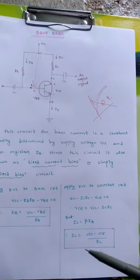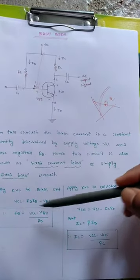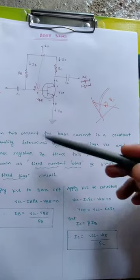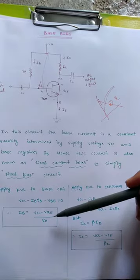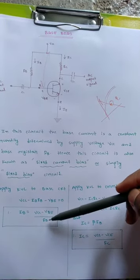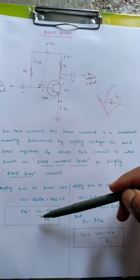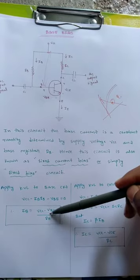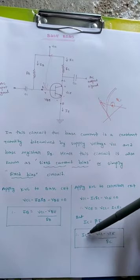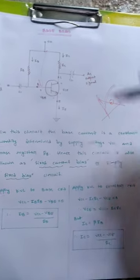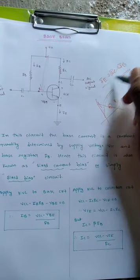By knowing these two equations, we can find IB and IC. We should observe that IB depends on VCC and RB, because VBE is constant—0.7 volts for silicon transistors and 0.3 volts for germanium. Since VCC is constant at the applied voltage, IB depends only on RB. IB controls the IC value because IE equals IC plus IB.